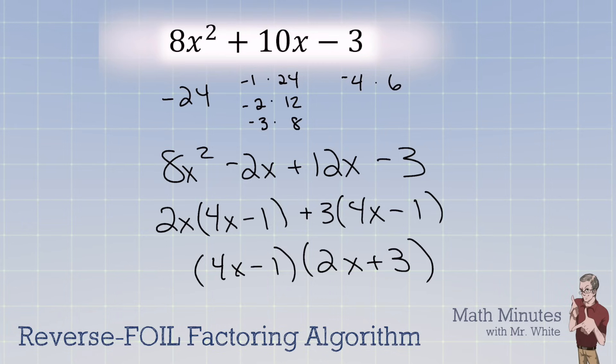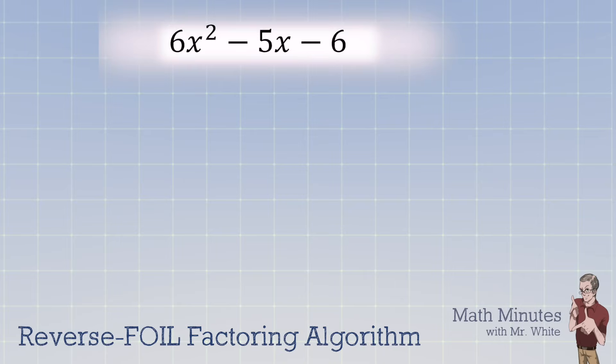I've got one more example with some more minus signs in it. Hopefully, you're getting the hang of this algorithm. We take the 6 times the negative 6. And we write negative 36. Now, we rack our brain, how many different ways can we make 36? There's quite a bit here. So give me a moment to write them all down. 3 times 12. We've got 4 times 9. And we've got 6 times 6. Now, once again, we're making negative 36. So one of them has to be negative. One has to be positive. And this time, I want to make a negative 5x middle term. So I believe I need to make the big number negative this time.